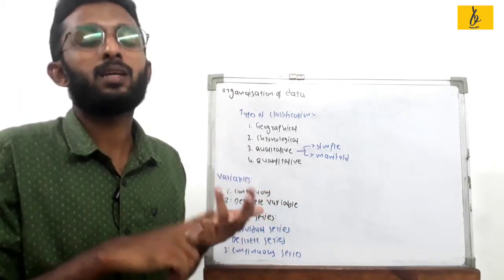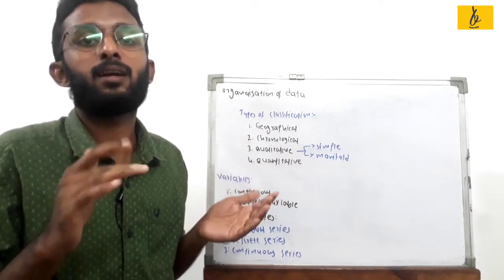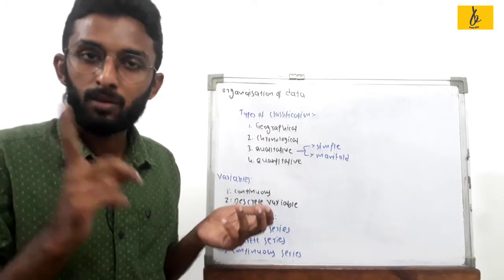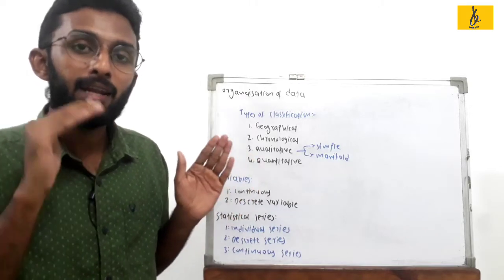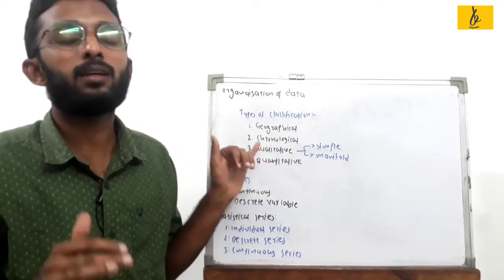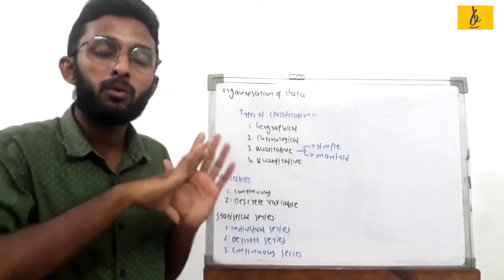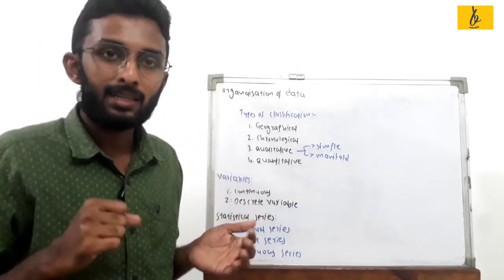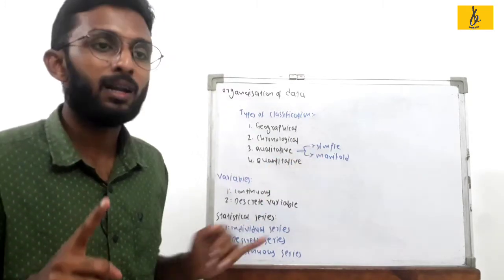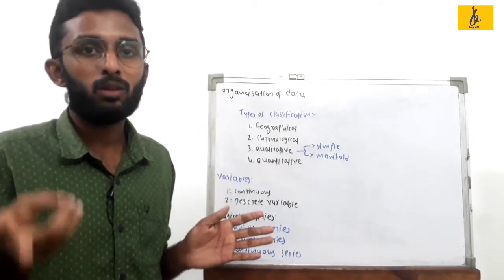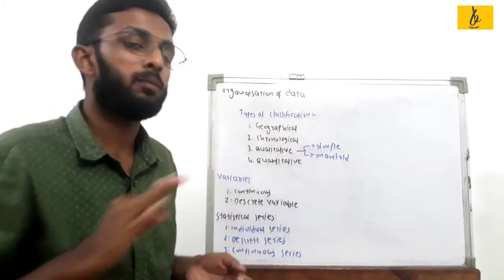Another type is qualitative classification. Some attributes of a human being — such as sex (male or female), height, and eyesight — are called qualitative attributes. If we classify based on one attribute like sex, it is a simplex classification. If we consider two or more attributes such as sex, height, and TV, it is called manifold classification.